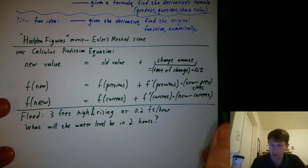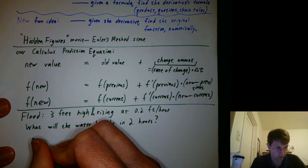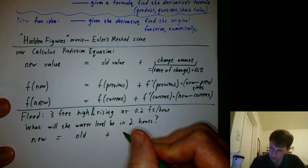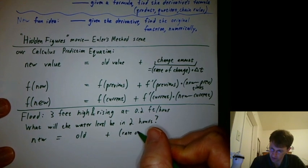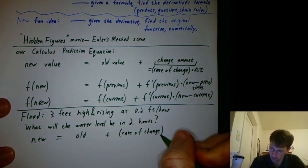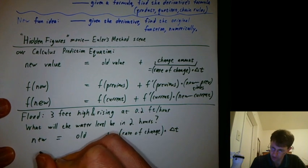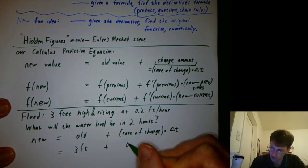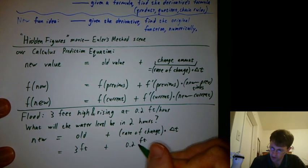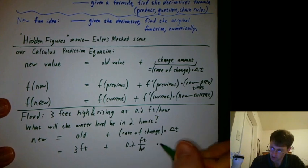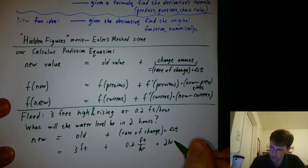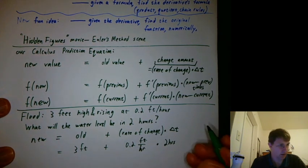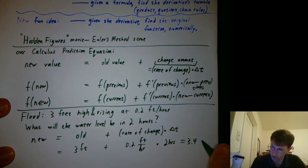So, we'll go ahead and calculate that. Hopefully, you get that the new value equals the old value plus rate of change. So, we get new = old value plus rate of change, which is 0.2 feet per hour, and delta T is two hours. That way, the hours cancels the hours. You get feet. You add those two feet, and you get a grand total of 3.4 feet.